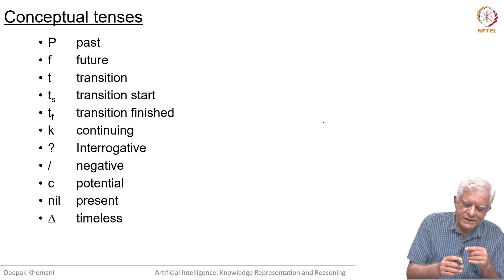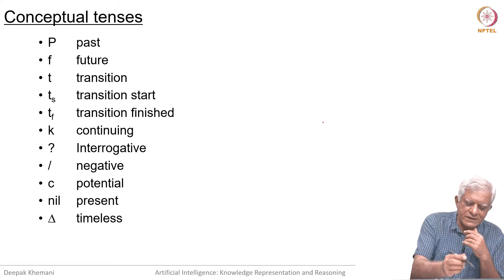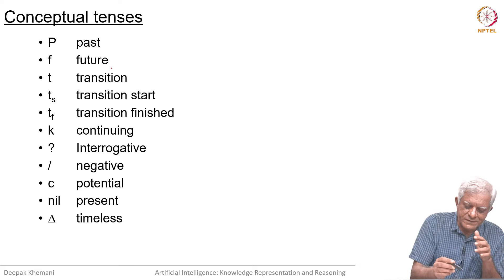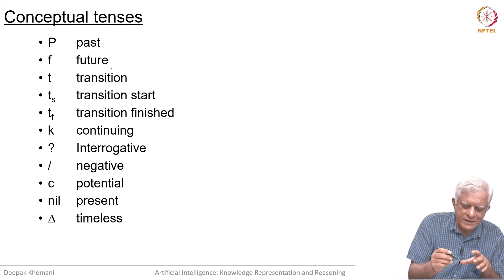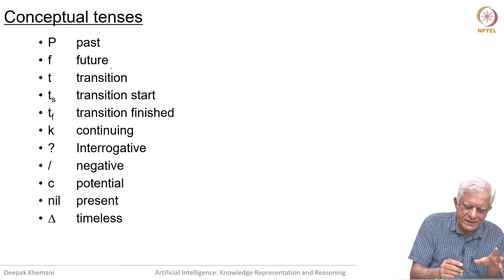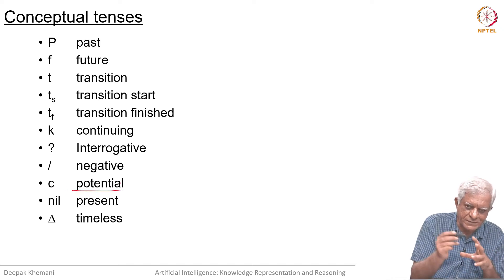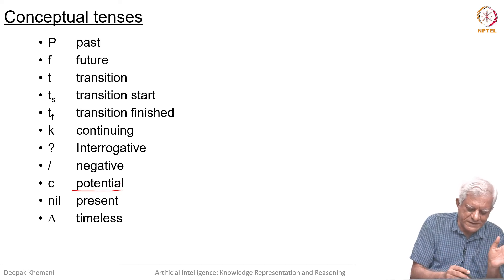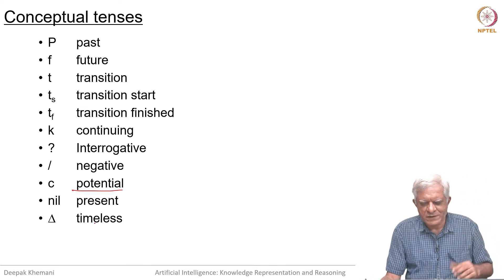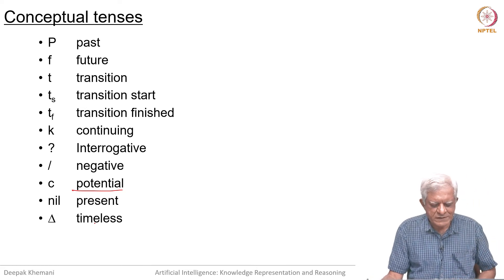These are the various time labels we can use: past, future, transition, transition start, transition finished, continuing, interrogative (when did it happen), negative (it did not happen), and C for potential — since 'smoking can kill you' uses potential. Nil is just the present tense and delta means timeless. So you can model different tenses.